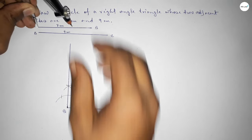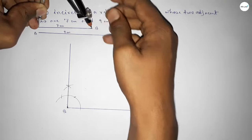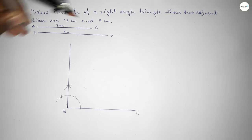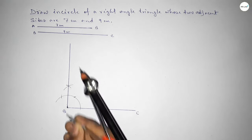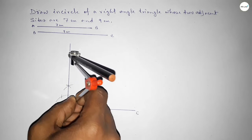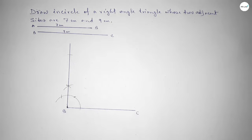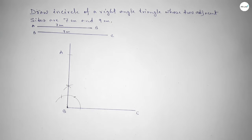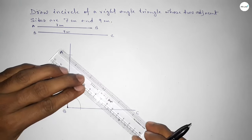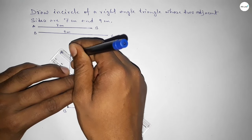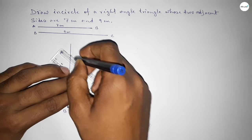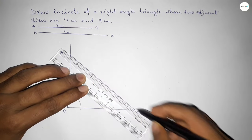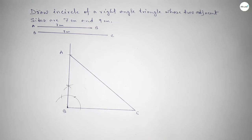Now taking the length AB as seven centimeters, putting the compass here and cutting at a point. Now joining AC, so we have got a right angle triangle.